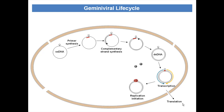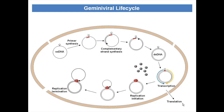Here you can see the protein in red color that is bound to the origin of replication of this DNA. This is called the rep protein, and once the rep protein is bound to the origin, it nicks the origin of replication and the replication process occurs. It is the rolling circle mode of replication.